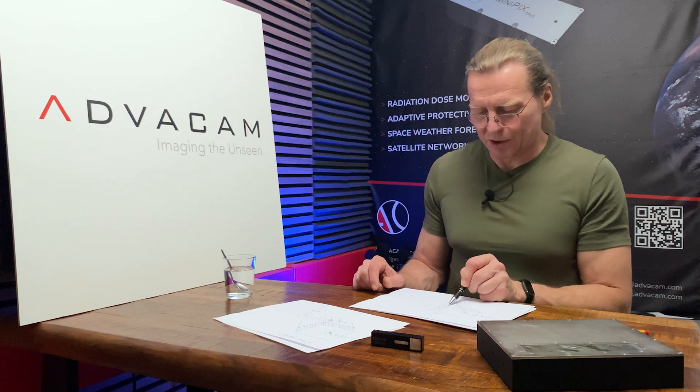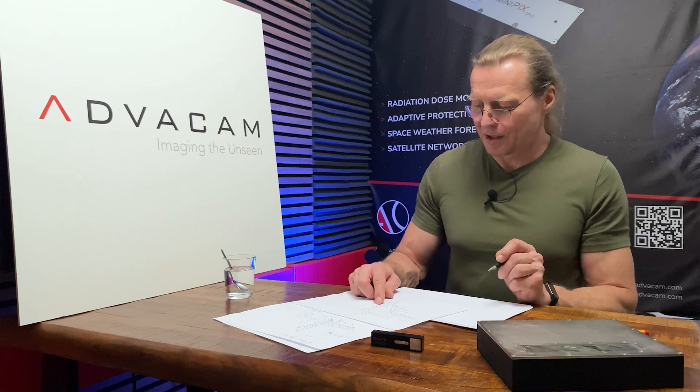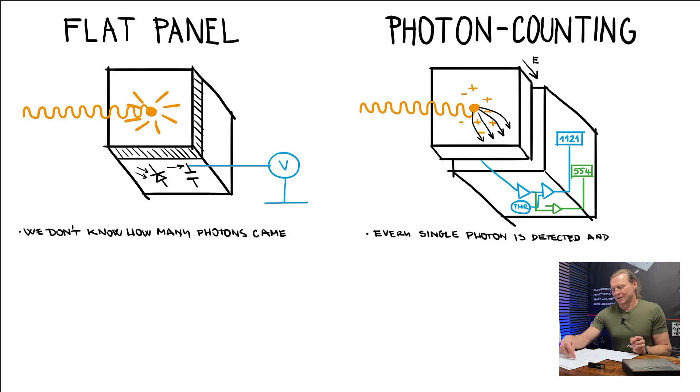The advantage of this technology compared to flat panel, there are a few advantages. The main advantage is that here we really count number of photons. We cannot have better precision than knowing the number of photons. In flat panel, we don't really know how many photons came because each photon generates certain amount of visible light. Then this light has to be converted to electrical signal in photodiode. And then this signal is accumulated in analog memory, which is capacitor. And when measured as a voltage, we don't have a clue how many photons were here. And all those stages are imprecise.